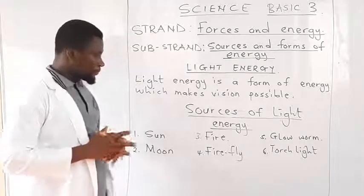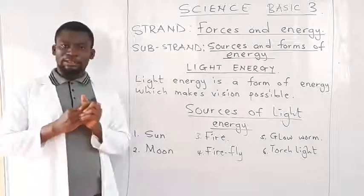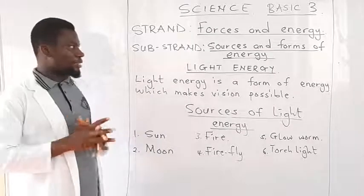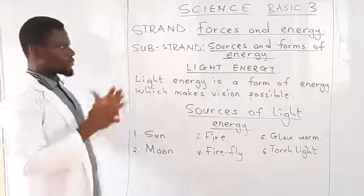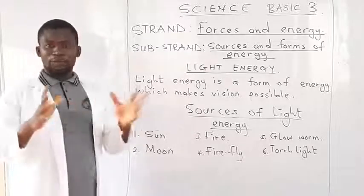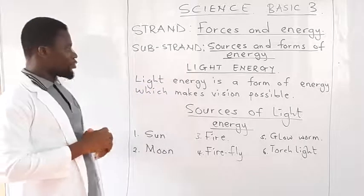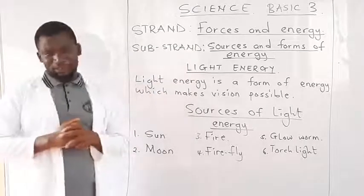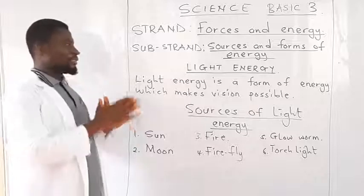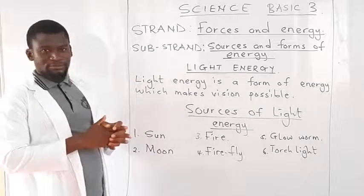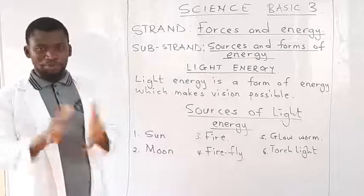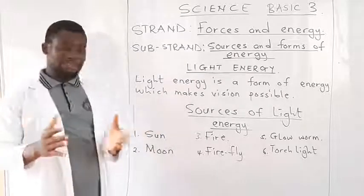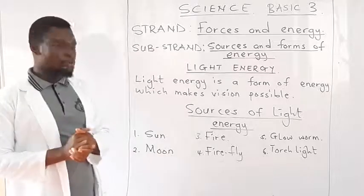So let's go through what we've learned today once more. Our strand is forces and energy. Our sub-strand has to do with sources and forms of energy. Then we looked at the very aspect of energy, that is light energy. And we all said it is a form of energy that makes vision possible. Then we look at the sources of light — where we get light from.